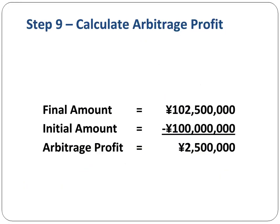In the final step, we calculate our arbitrage profit by subtracting the initial amount from the final amount. In our example, this amounts to 2.5 million yen. Had we started with Bank A, we would have lost money.